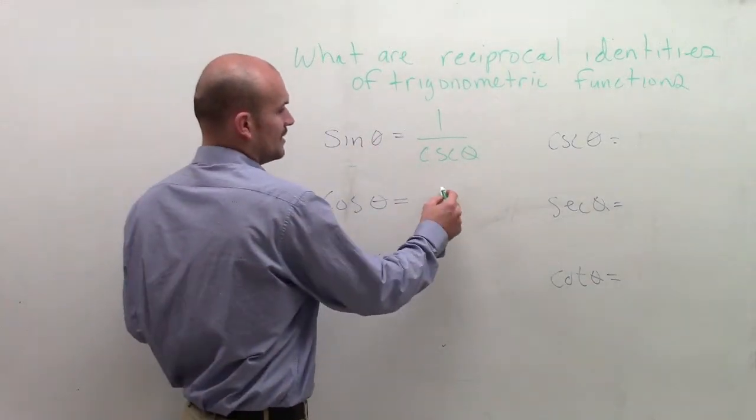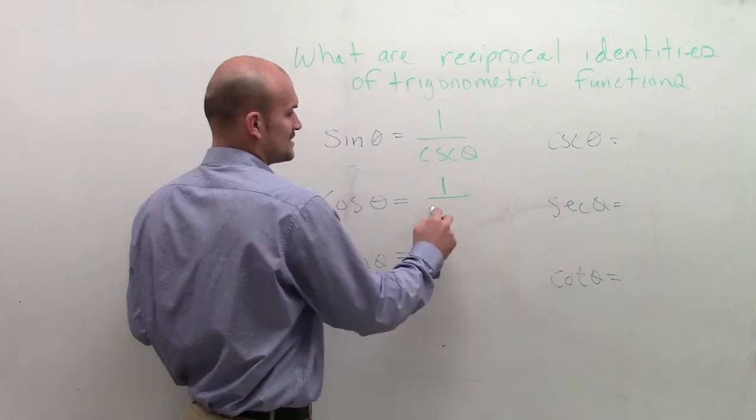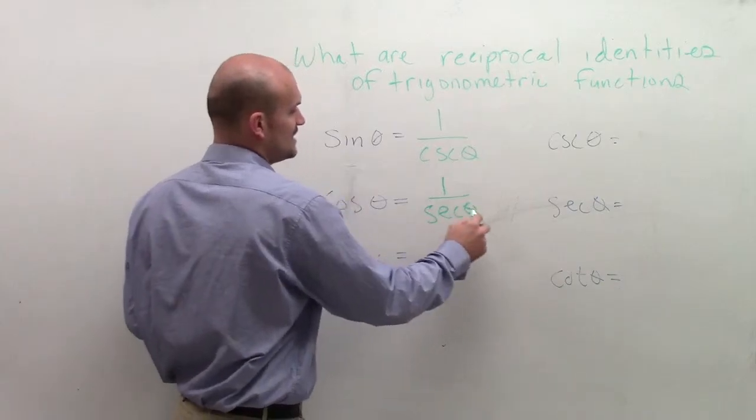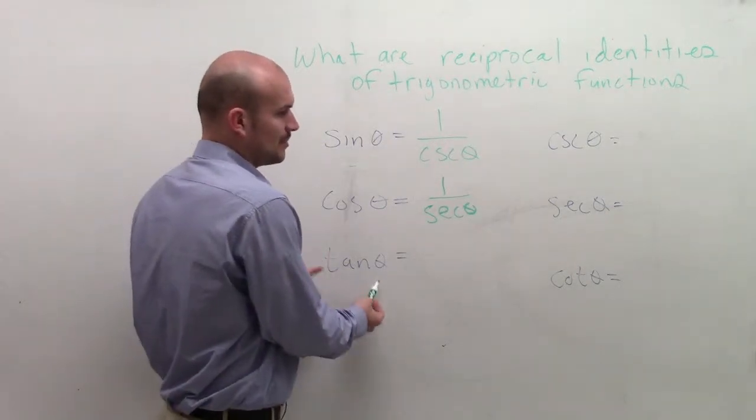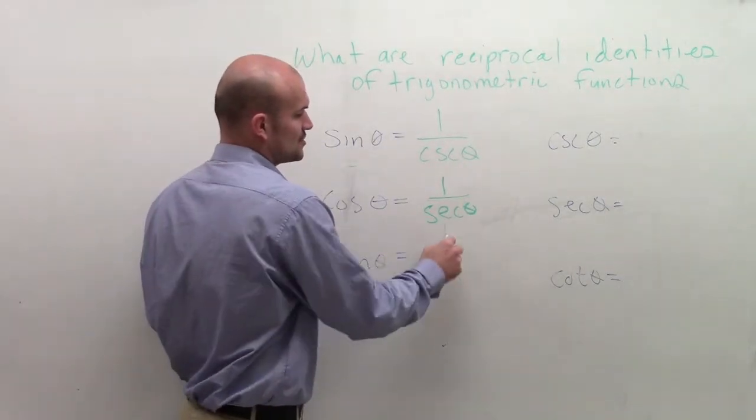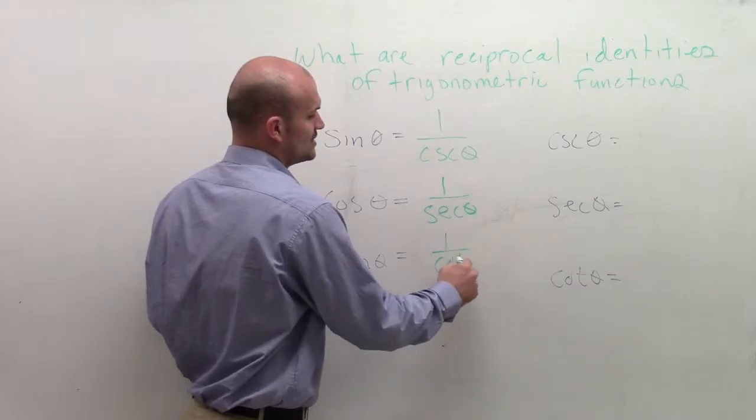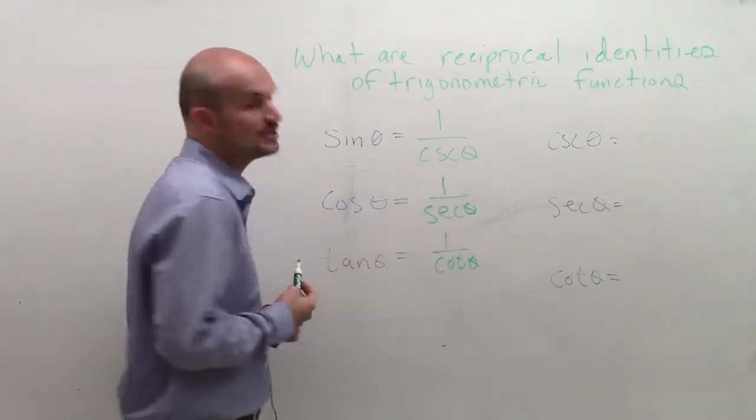Now, so cosine is the reciprocal of secant. So that means the reciprocal of secant is equal to cosine of theta. Same thing with tangent. The reciprocal of tangent is cotangent. So therefore, the reciprocal of cotangent of theta is going to equal to tangent of theta.